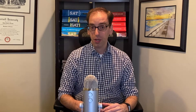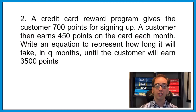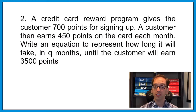This is a very popular type of question on both exams. When a question gives you the equation of a line to represent a situation: the slope means the rate of change, the y-intercept means the initial value, the x represents the unit of time, and the x-intercept means how long it takes for the measurement to reach zero — in this case, how long until the balloon hits the ground.